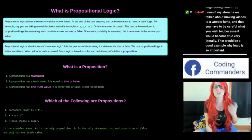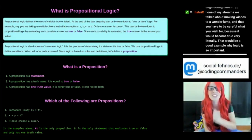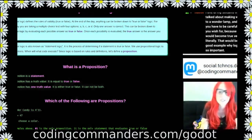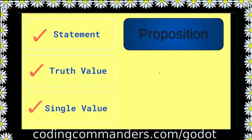We use propositional logic to define conditions. When will code execute? Since logic is based on rules and definitions, let's define a proposition. A proposition is a statement. A proposition has a truth value. That means a proposition is either true or false. And it has one single truth value. That means it can't be both true and false. It has to be one or the other. A proposition is either going to be true or it's going to be false. It can't be both. And it can't be jelly beans or 568. It has to either be true or false. There's two possibilities.